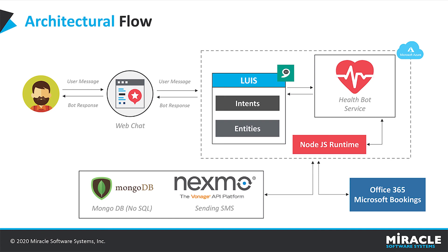Now let us see the architectural flow of this bot. Initially the user interacts with the bot in a web channel. The message given by the user is sent as input to LUIS. LUIS analyzes the user input, and based on the detected intent, a specific scenario is triggered. From that scenario we hit the backend, which makes database calls to MongoDB. After scheduling or modifying the appointment, SMSs are sent to users using the Nexmo service. Finally, all bookings are scheduled in Office 365 Microsoft Bookings. This is the overall architectural flow of this bot.